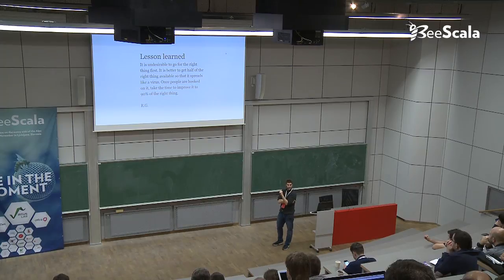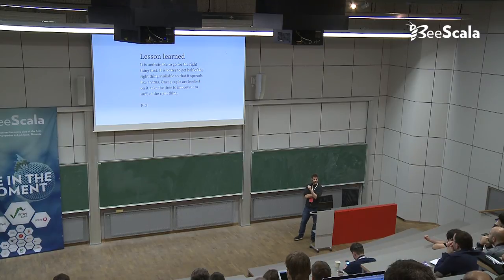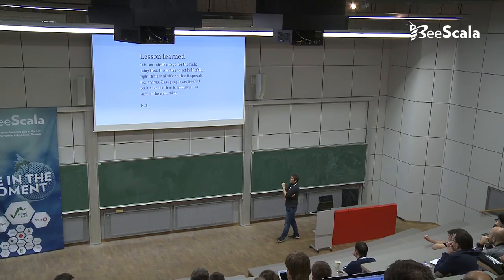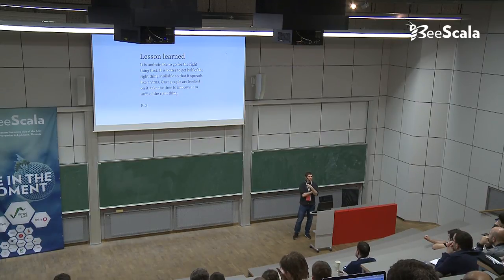C is everywhere today. You all know about Unix. Lisp is not everywhere. The moral here is that it is undesirable to go for the right thing first — it is better to get half of the right thing available so it spreads like a virus. Instead of providing Lisp with garbage collection and advanced compiler optimizations, just provide C without automatic memory management, get people hooked, and then improve it to 90% of the right thing.